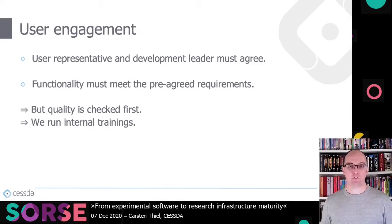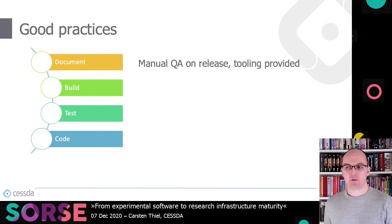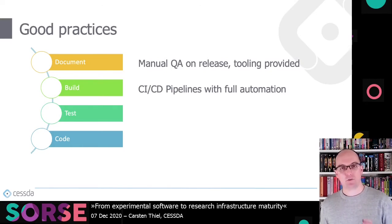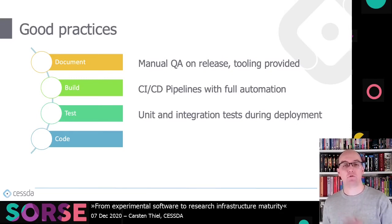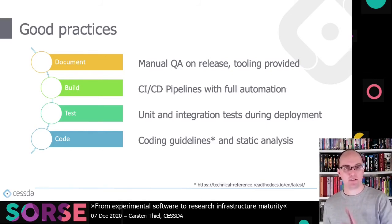We also run internal trainings on this. Looking back at the good practices — documentation, building, testing, coding — we have manual QA on the release with tooling to ensure documentation is up to date and matches new functionality. We have continuous integration and continuous delivery pipelines that automatically build on every single commit. We run unit and integration tests that will fail the build if it's broken. We also have coding styles, guidelines, and static analysis of all code. These guidelines are developed in the context of the EURISE Network — agreed on with OPERAS, DARIA, and CLARIN.